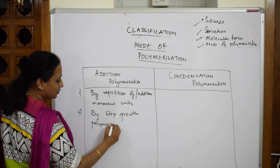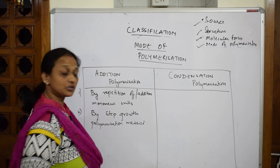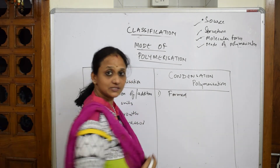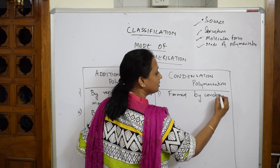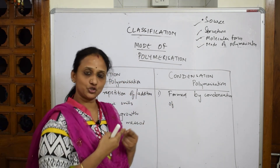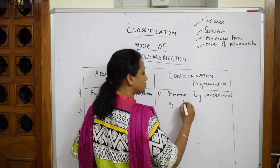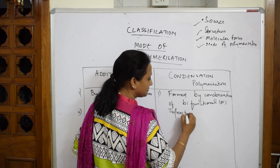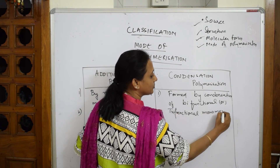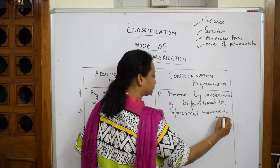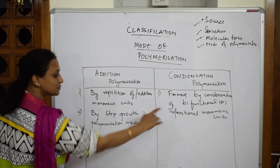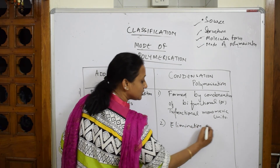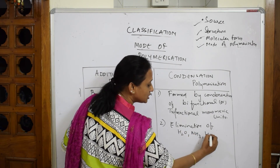Condensation polymerization is formed by condensation of bifunctional or trifunctional monomeric units. During this process, there is elimination of small molecules — water, ammonia, or HCl. This has been covered in detail in the condensation polymerization video.